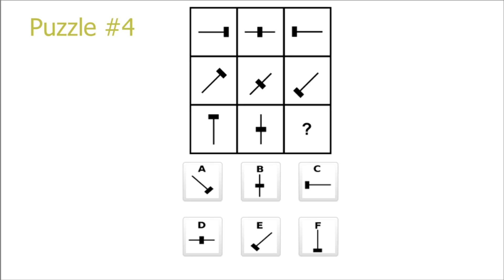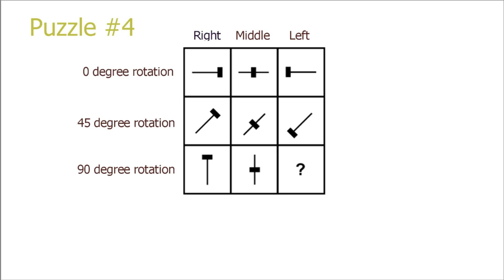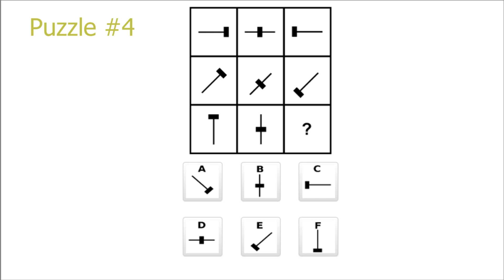Puzzle 4. This puzzle is similar except there's a moving part going from column to column and a rotation going from row to row. There is a 0 degree rotation, 45 degree rotation, and 90 degree rotation. We can either base ourselves on the row and move the black square to the bottom, or take the column and rotate the picture 45 degrees. As you can see, this is option F.